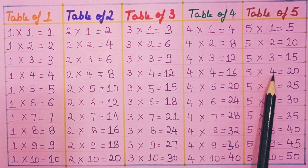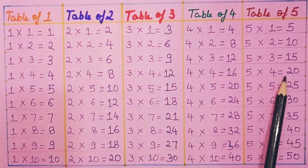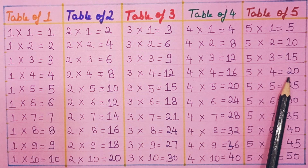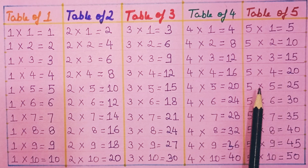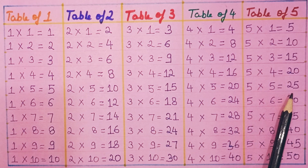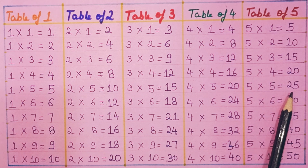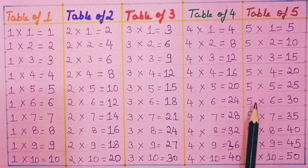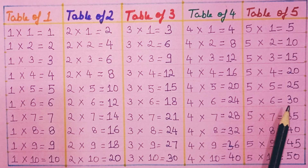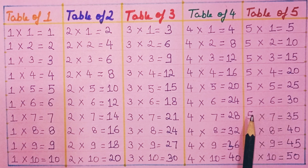Five fours are twenty. Five fives are twenty-five. Five sixes are thirty.